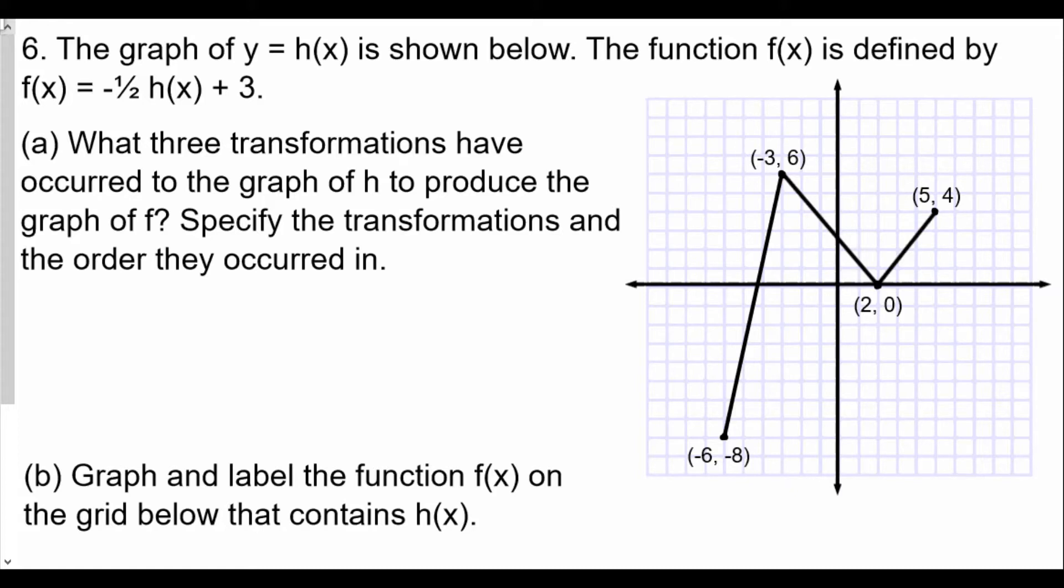It's very similar to question number 5. When we approach this, we use order of operations. We see here that f of x is first going to multiply h of x by negative 1 half, and negative 1 half is really negative 1 times 1 half. The very first transformation, because of negative 1, would be reflect in the x-axis. That's the very first thing.